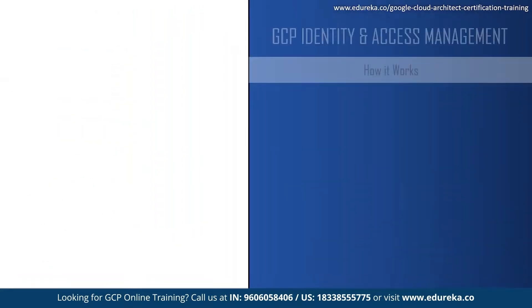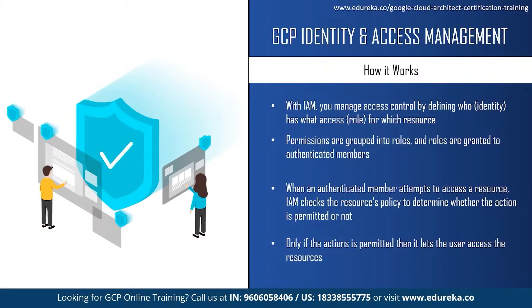Now let us understand how IAM works. With Identity and Access Management, you can manage access control by defining who has what access for which resources — such as Compute Engine virtual machine instances, Google Kubernetes Engine clusters, Cloud Storage buckets, and so on. In IAM, permissions to access a resource are not granted directly to the end user. Instead, permissions are grouped into roles, and roles are granted to authenticated members. An IAM policy defines and enforces what roles are granted to which members, and this policy is attached to a resource. When an authenticated member attempts to access a resource, IAM checks the resource policy to determine whether the action is permitted.